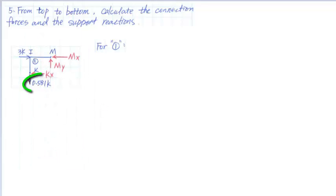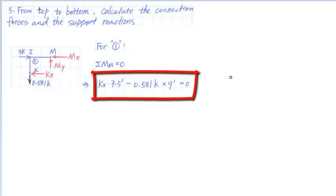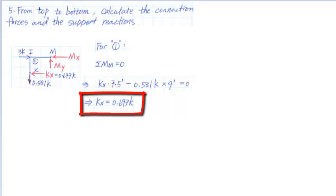For member 1, the vertical force in column ID is 0.581 kips uplift, and there are three unknown connection forces. Summing moments at point M, assuming clockwise positive, we get KX times 7.5 feet minus 0.581 kips times 9 feet equals 0. Solving, KX equals 0.697 kips.